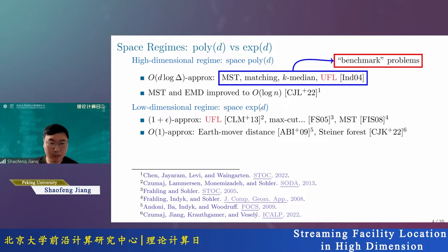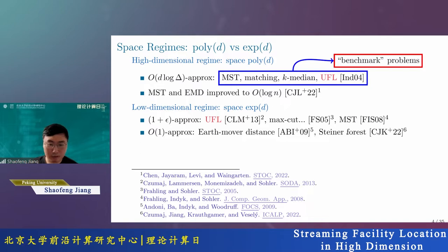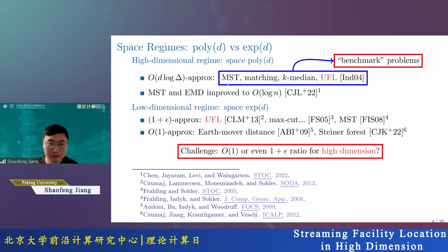The study in low dimension is much more successful. Even though space is exponential in D, the approximation ratio can be dramatically improved to 1+epsilon for many problems. For instance, UFL achieves a 1+epsilon ratio with polylog(n)·2^D space. For max cut, max spanning tree, max matching, and MST, 1+epsilon is also achievable. For the harder problems, order-1 approximation is possible for Earth Mover Distance. But there is a gap: can we achieve order-1 or 1+epsilon in the high-dimensional case, or show it's impossible? This is an outstanding challenge in the area.